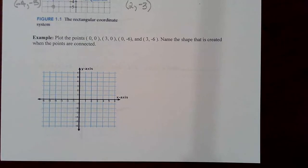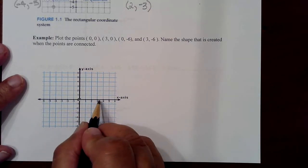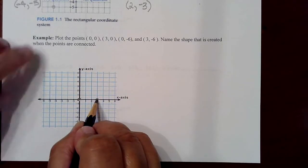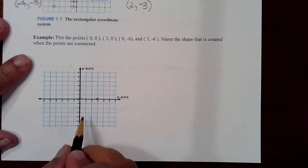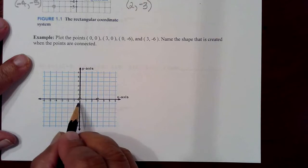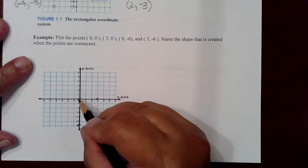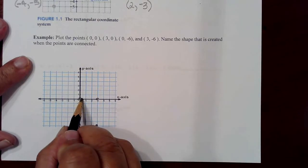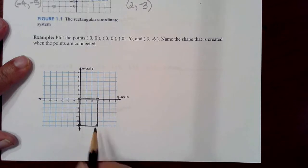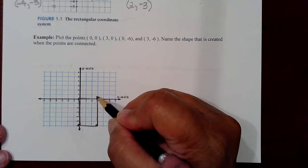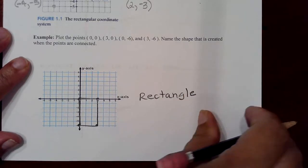Next problem asks you to plot some points and just practice telling what the shape is. So (0, 0) would be right there. That's also known as the origin. And if you go to (3, 0), that would mean out 3 units on the x-axis, 0 units on the y-axis. Then for the next point, (0, -6), that means 0 units on the x-axis, but do drop down to negative 6. Then plotting (3, -6), that would be over 3 and down 6. And if you were going to name the shape, that would be a rectangle.